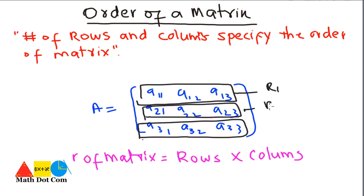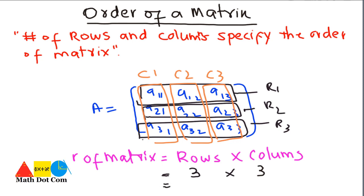We have one, two, and three, we have three rows, so we will write three here. And how many columns are there? We have one, two, and three. This is C1, C2, and C3, and three columns are there.